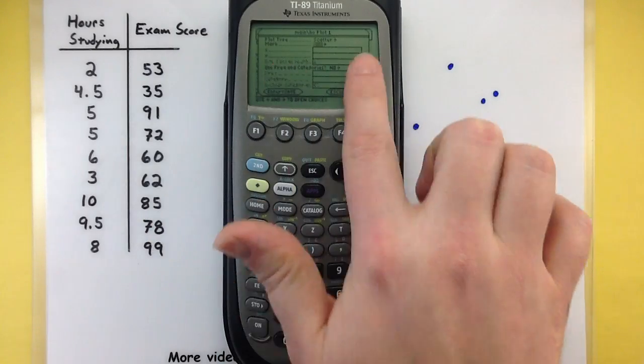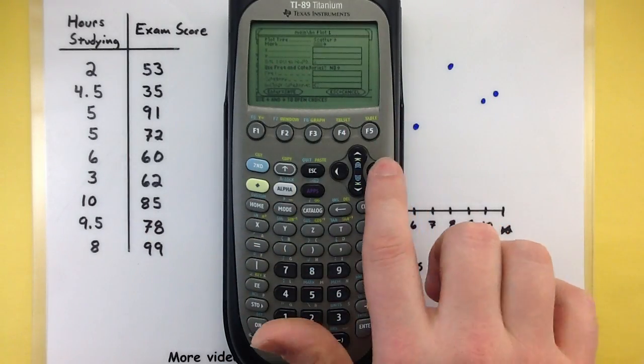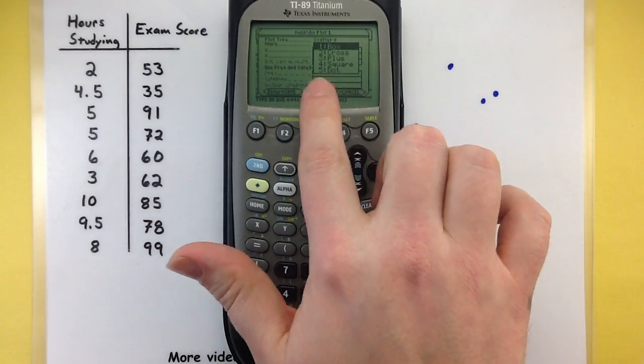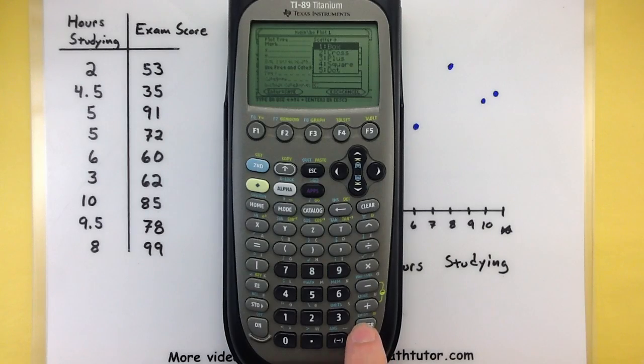Okay press our down arrow. What kind of marks do we want them to use? So we got boxes, crosses, plus signs, squares, and dots. I'm just going to leave this as a little box but if you want smaller points, say if you got lots of data, it can be more handy to put the dot feature in there. So every data point will look like a little box.